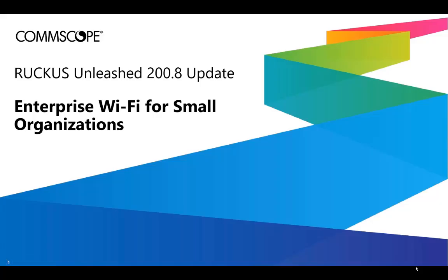This video will describe the CommScope Ruckus Unleashed Solution, which is a high-performance, simple-to-setup, easy-to-manage, and affordable Wi-Fi solution for SMB customers. We'll focus on the most recent 200.8 release update features.